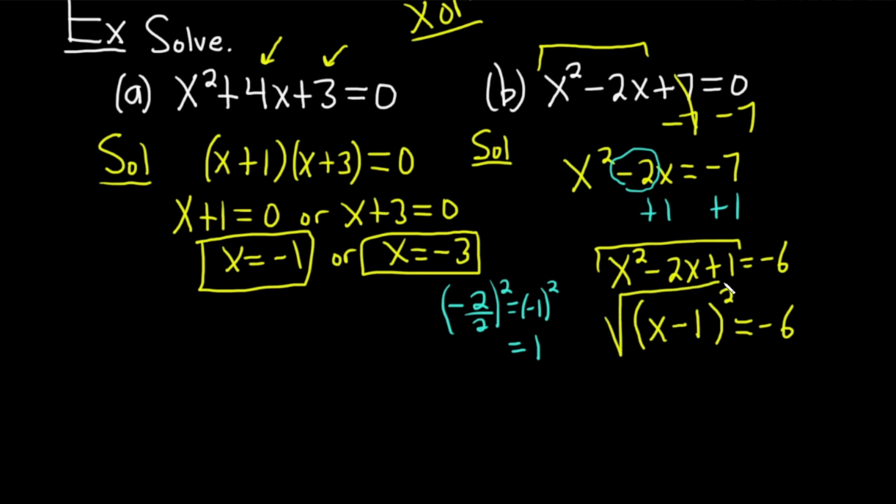Now we take the square root of both sides. When you do that, you get a plus or minus. So you get x minus 1 equals plus or minus. And because we have a negative inside the square root here, it's going to become an i. So we get i square root of 6. We end up with x equals 1 plus or minus i square root of 6.